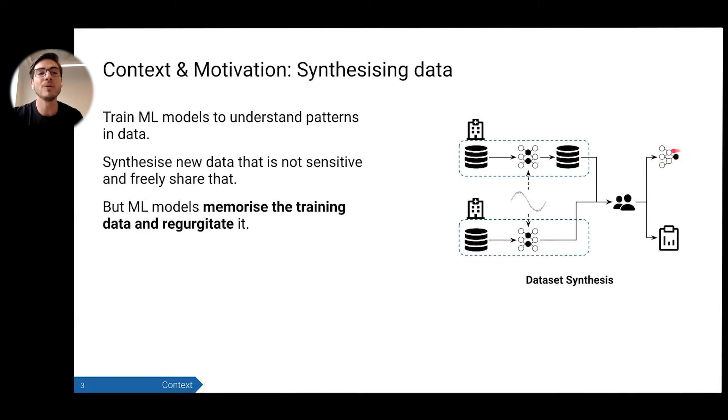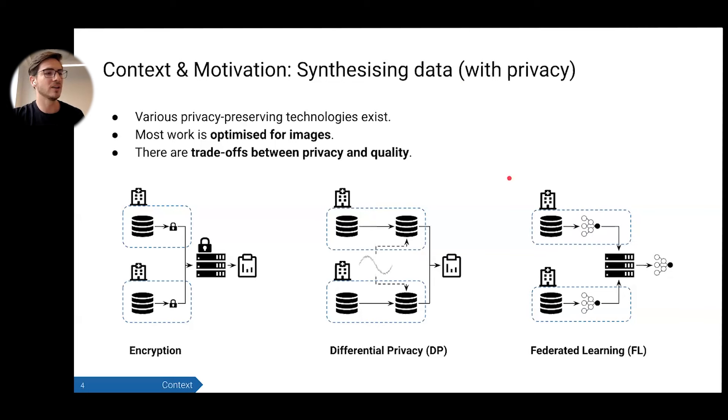It sounds super promising. The problem is that machine learning models tend to memorize the training data and then regurgitate it. There are also lots of instances of adversarial attacks where you can coerce it out of the model parameters. It's just, again, like anonymization—not good enough. Fortunately, there are several privacy-preserving technologies, and there's already been quite a bit of work in applying them to machine learning, especially in supervised learning. But they still suck. Most of the work is optimized for images, and there's this tradeoff between the quality of the data and the privacy level.